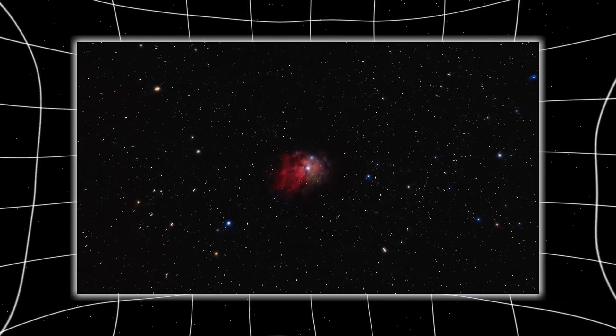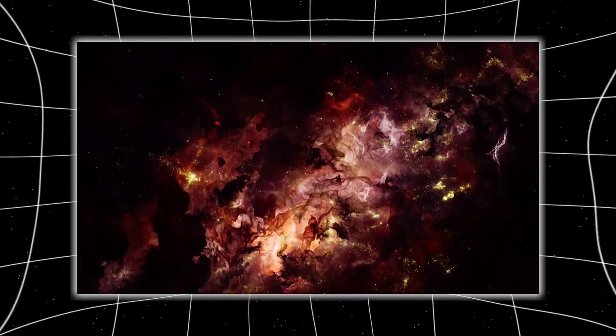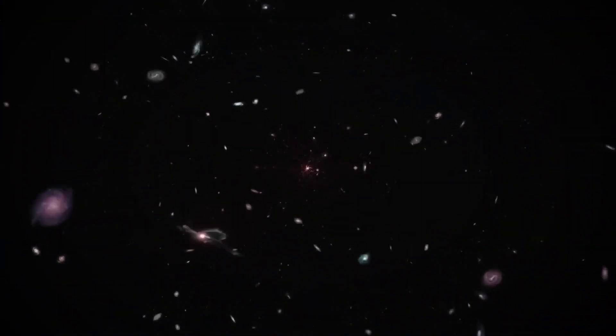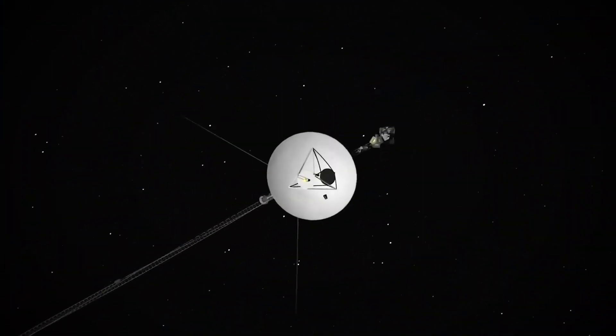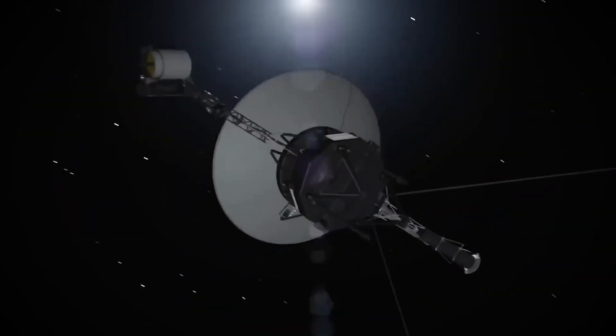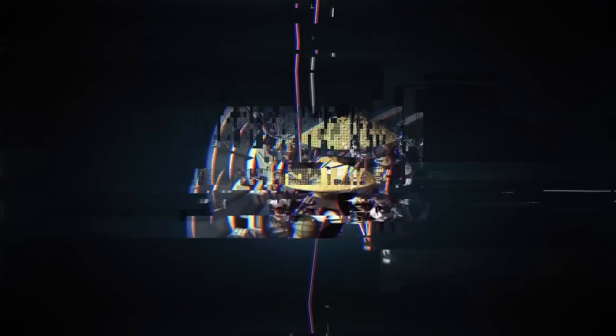We used to think the sun's heliosphere was a soft gradient fading into space. But Voyager proved otherwise. It's not a shoreline. It's a cliff. And beyond it, the rules change.